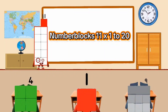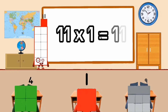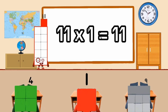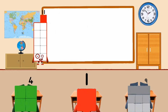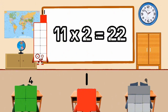Number blocks 11, times 1 to 20. 11 times 1 equal 11. 11 times 2 equal 22.